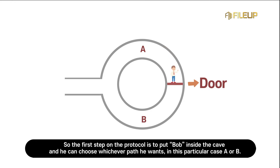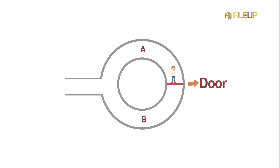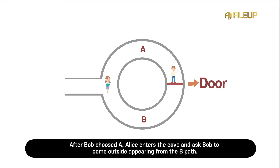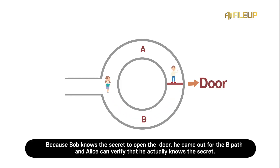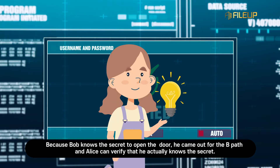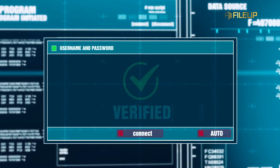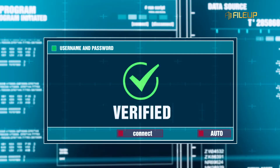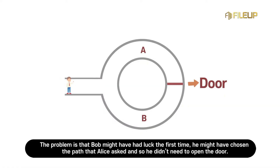After Bob chooses, Alice enters the cave and asks Bob to come outside appearing from the B path. Because Bob knows the secret to open the door, he came out from the B path, and Alice can verify that he actually knows the secret.